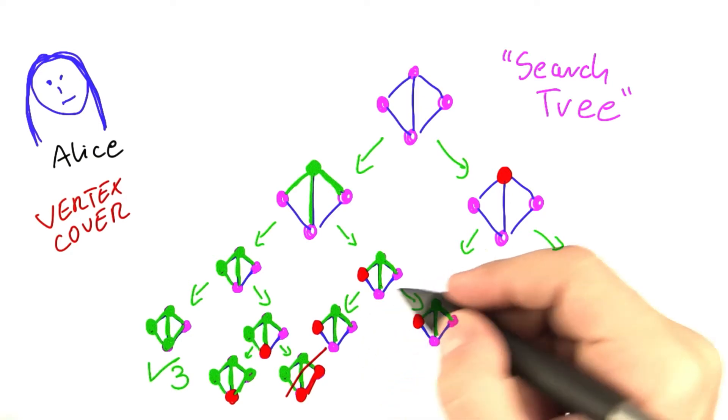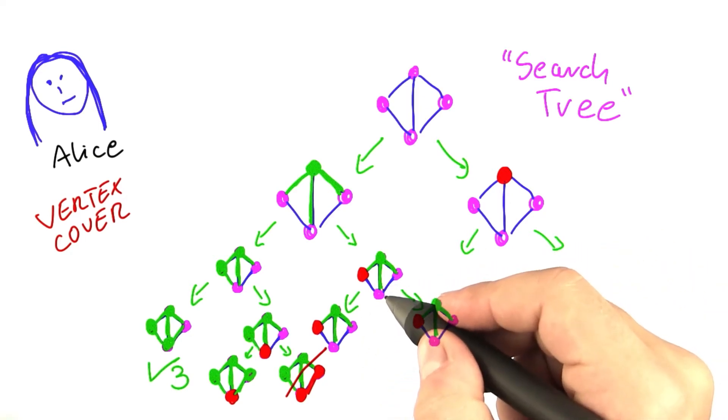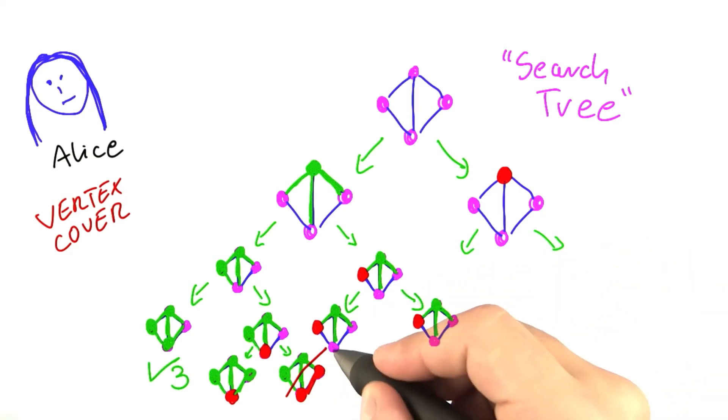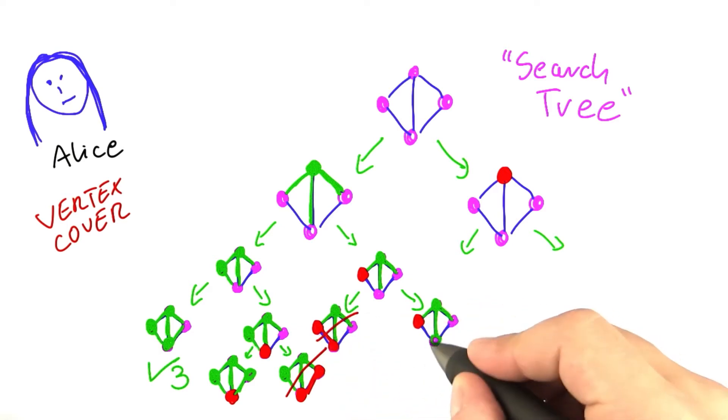And again, we're going to do the same thing. So we're going to consider one possibility where this vertex down here is not in the vertex cover. And again, we see, whoops, this is invalid. So we do not need to continue any further. Next time, we're going to put this vertex into the vertex cover. And yes, we have a valid solution of size two.